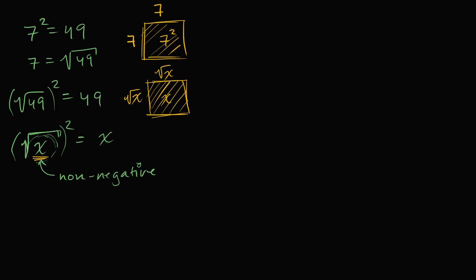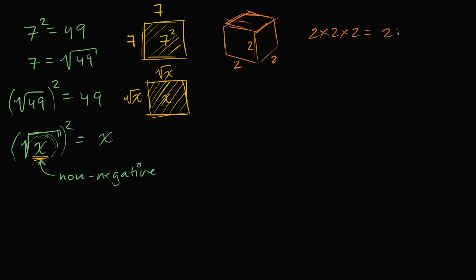Now what about cube root? Same idea. If I have a cube, all of its dimensions have the same length. So a two by two by two cube — what's the volume? The volume is two times two times two, which is two to the third power, or two cubed. That's why we use the word 'cubed,' because it represents the volume of a cube where each side has length two, and this equals eight.